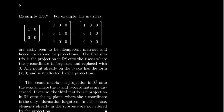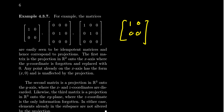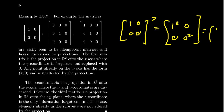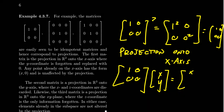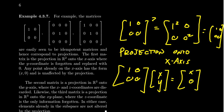Here are three matrices to convince yourself are idempotent. The first is the diagonal matrix [1,0; 0,0]. Since it's diagonal, squaring it just squares each diagonal entry: 1²=1 and 0²=0, giving back the same matrix. If you multiply this by a generic vector (x,y) you get (x,0) — the y-coordinate is forgotten. This is projection onto the x-axis in R².